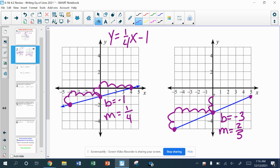So my slope is 2 fifths. Up 2, 1, 2, 3, 4, 5. So the equation is going to be y equals 2 fifths x minus 3.